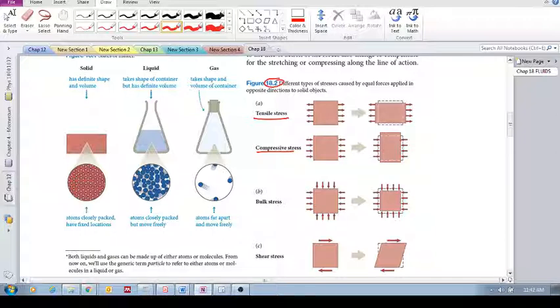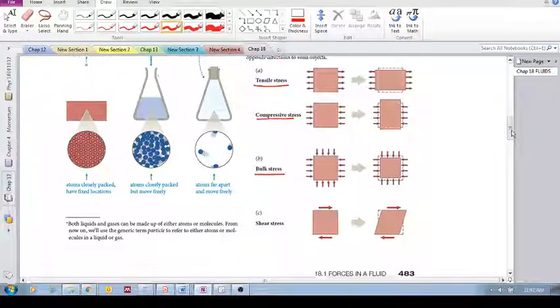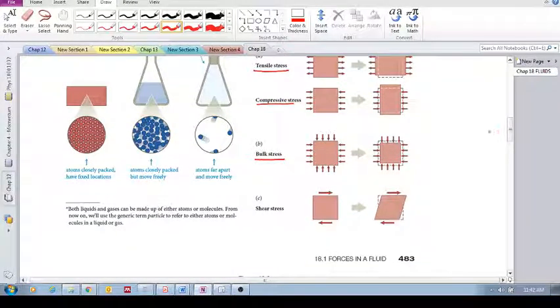Then another type of stress is bulk stress. Bulk stress is when you change the volume of the object by applying pressure on all sides of the object, so that the entire volume shrinks.